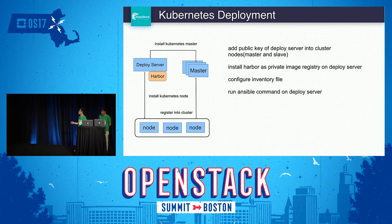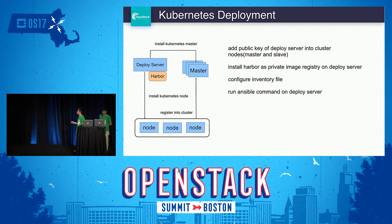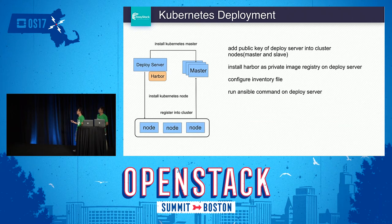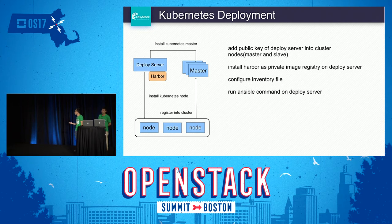These are detailed deployment steps for Kubernetes. The deploy server uses Ansible scripts to perform deployments. First, we add the public keys of the deploy server into the cluster nodes, including master and slave nodes. We use Harbor as a private image registry on the deploy server, because all Kubernetes components and features run in pods, so Docker images must be stored in an image registry. The deploy server then configures the inventory file and runs the Ansible command to execute the deployment.